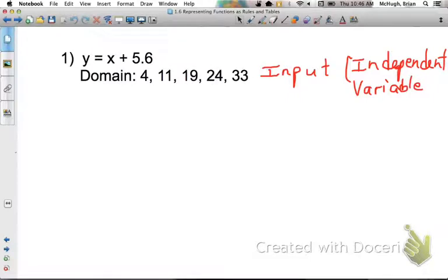So when we're talking about, in this case, an independent variable, that's x, and these values 4, 11, 19, 24, and 33 are the values that we're going to substitute in for the independent variable.